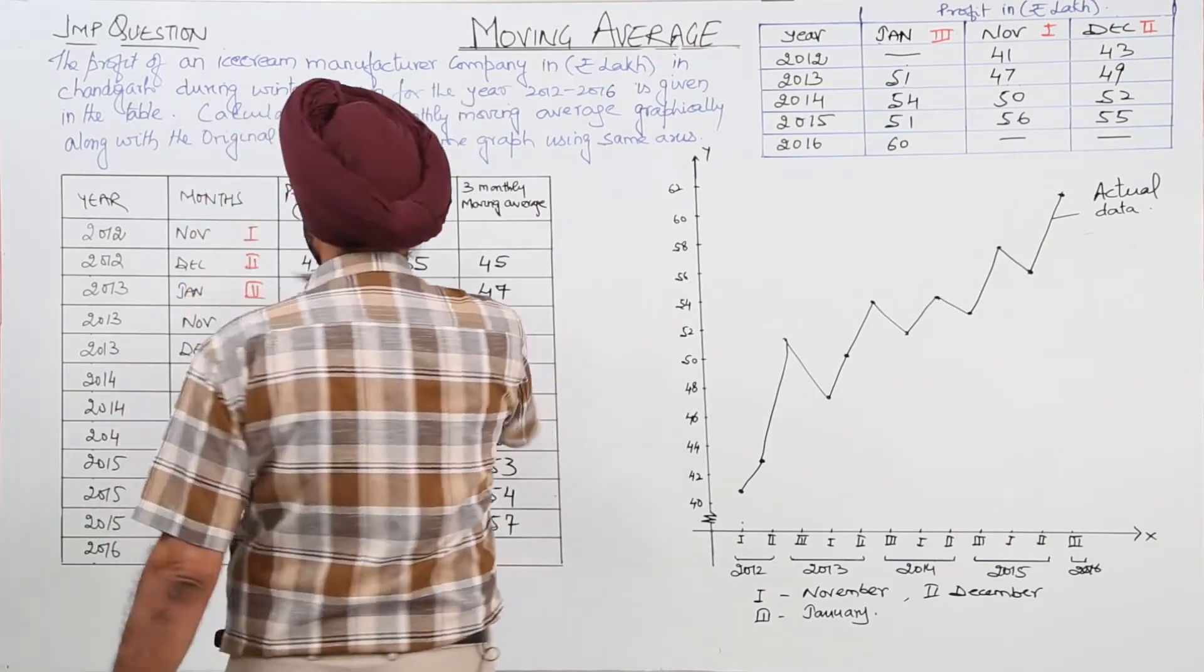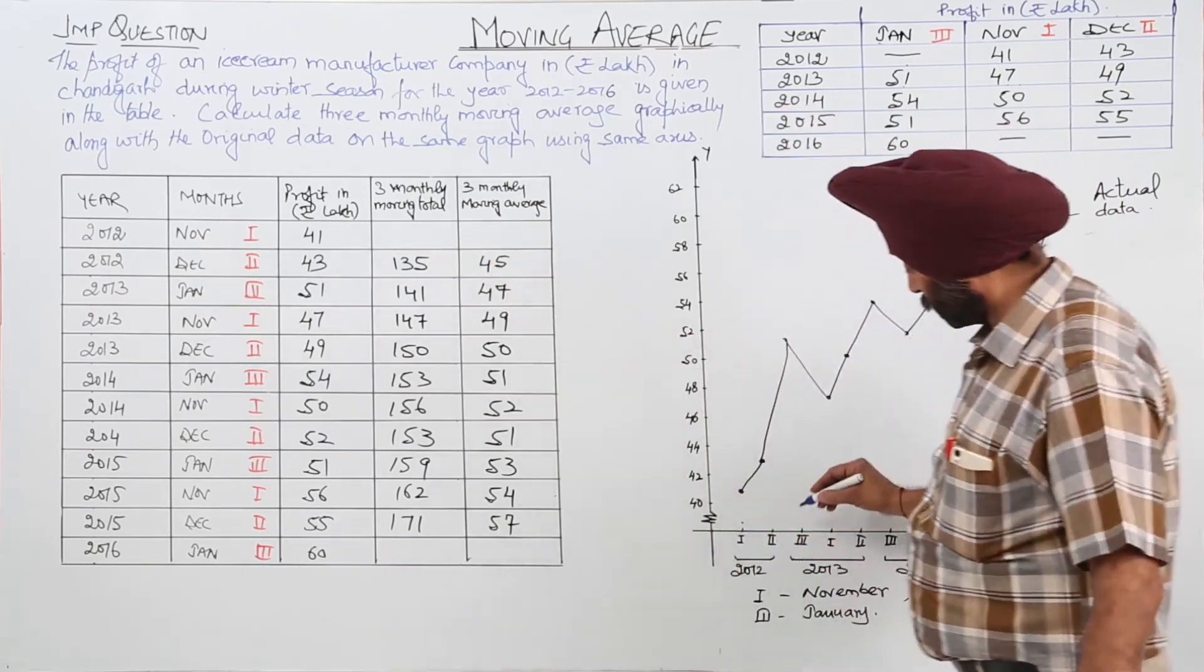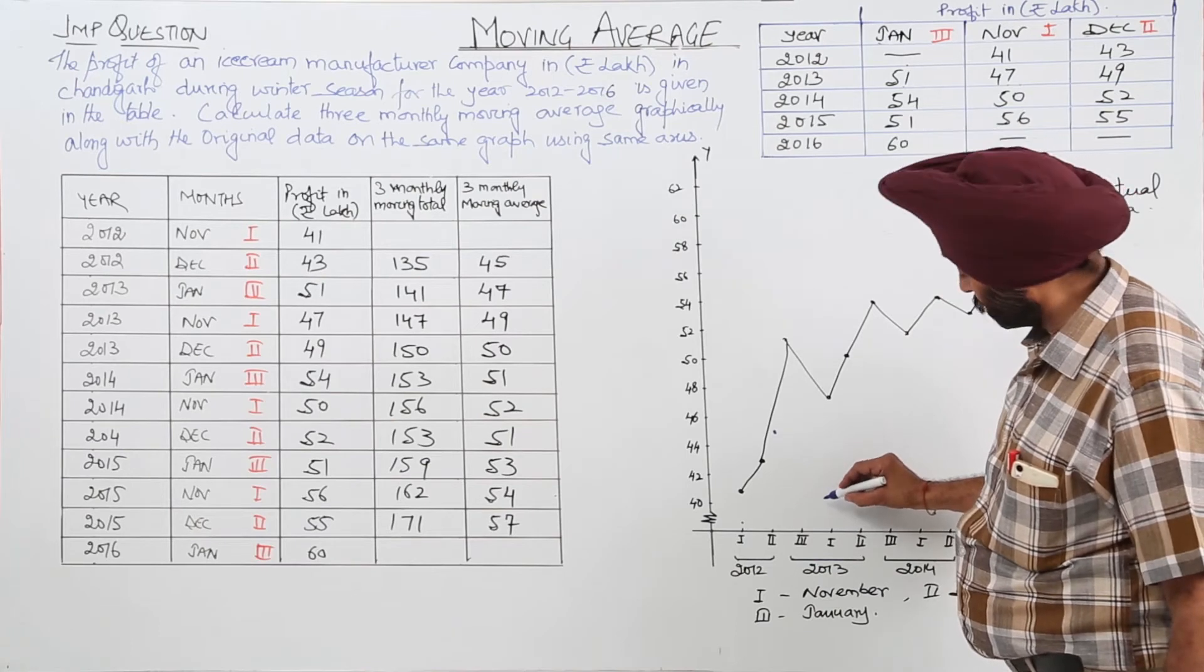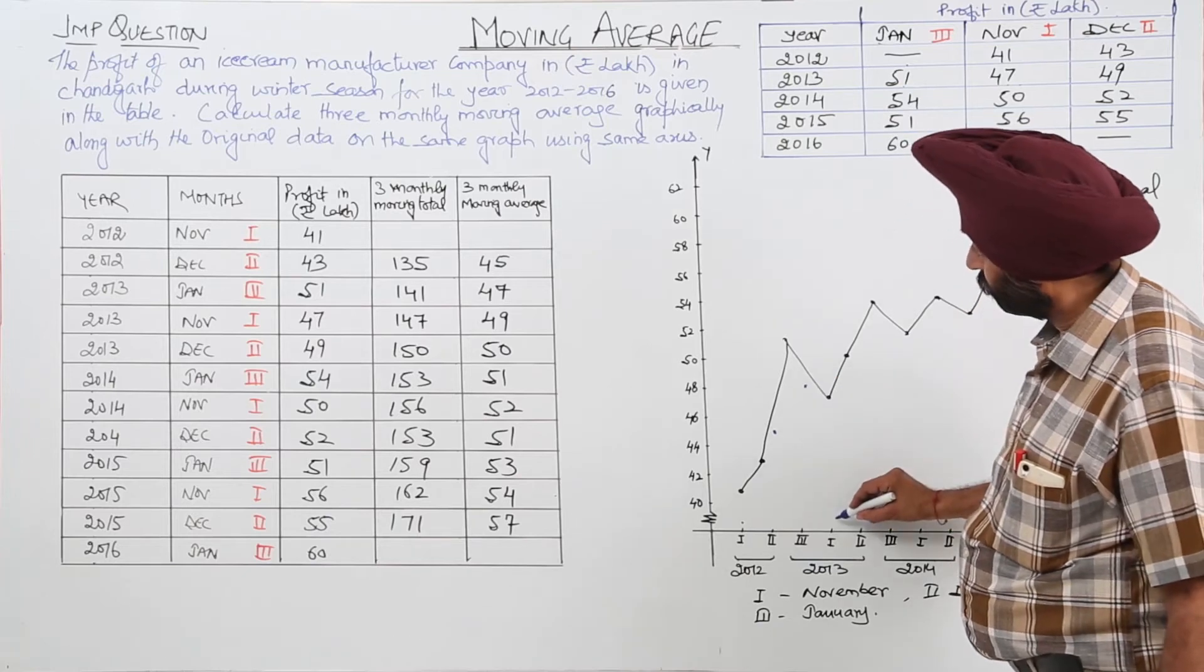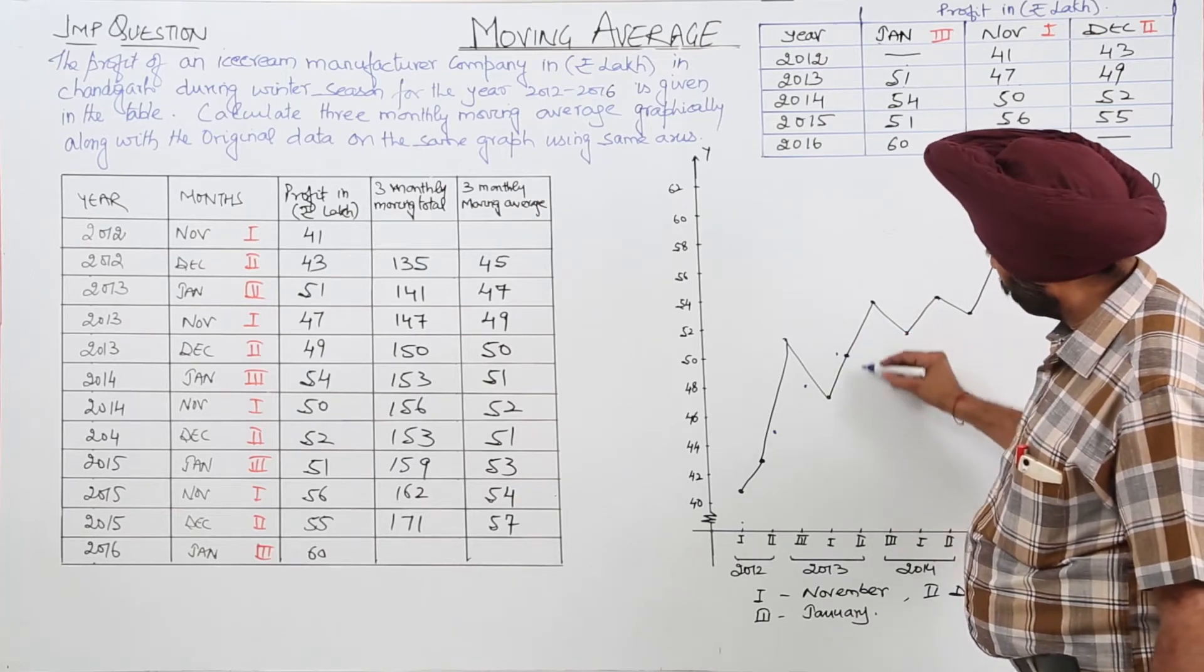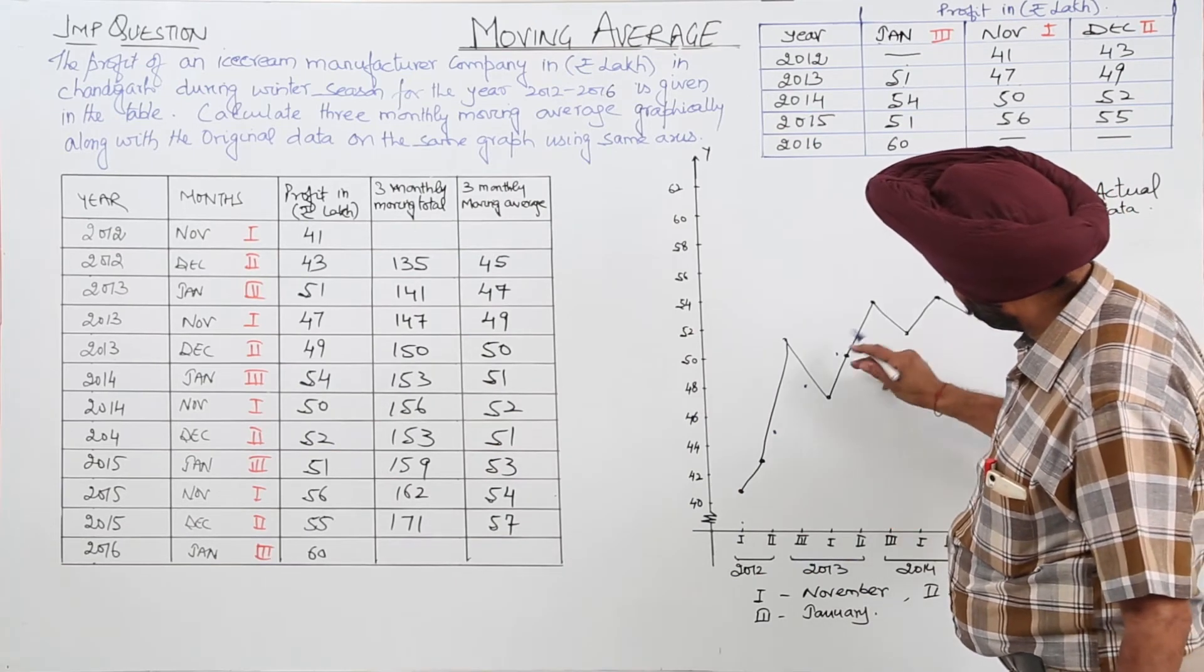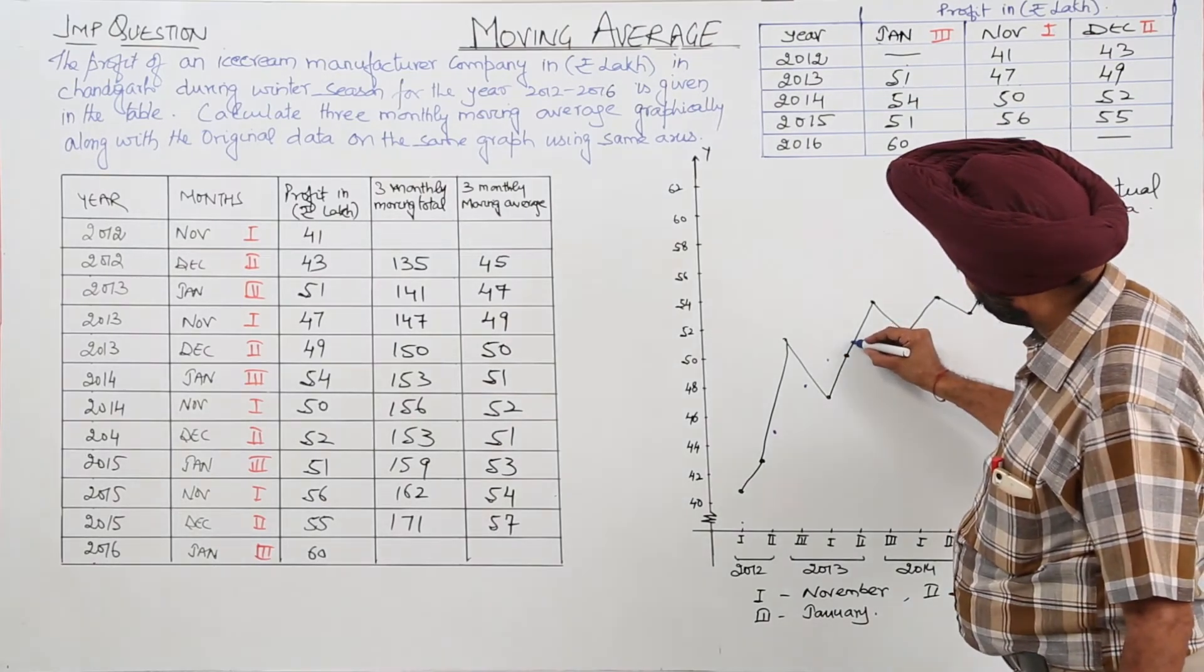Now we are having, starting from the second, it is 45. 45 is for 2012. Here it is 45. Then 47, 47, 49. 50 is for the second. 50.